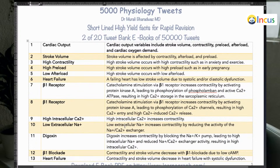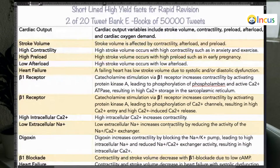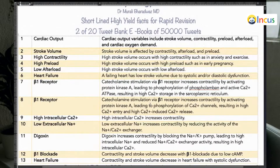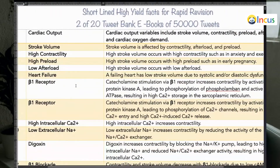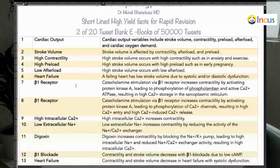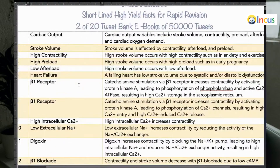Cardiac output variables include stroke volume, contractility, preload, afterload, and cardiac oxygen demand. What decides the stroke volume? It is the contractility, afterload (the pressure against which the heart is pumping), and the preload (the amount of blood reaching the heart). These are the determinants of stroke volume.